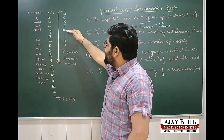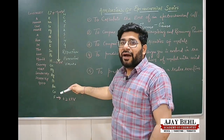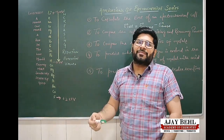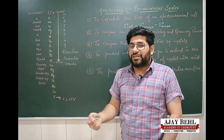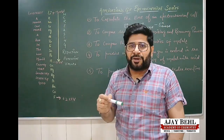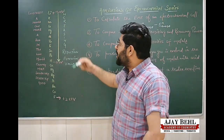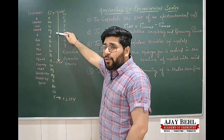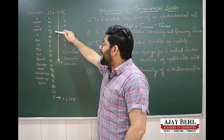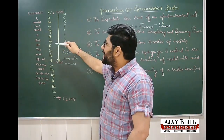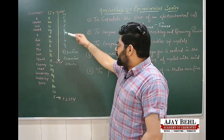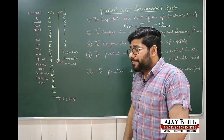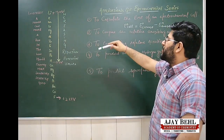As we move down the electrochemical series, the reduction potential value increases, meaning the tendency to get reduced increases — so those elements act as better oxidizing agents. Those at the top have lower reduction potential and are better reducing agents. Therefore, lithium is one of the strongest reducing agents, and fluorine is the strongest oxidizing agent.